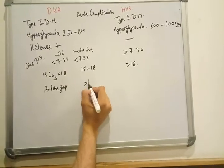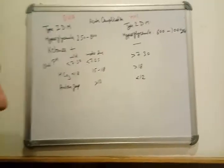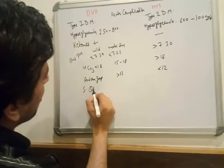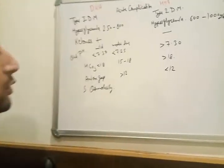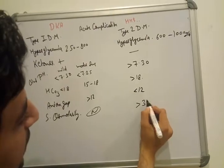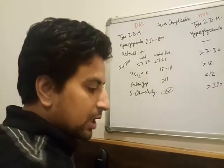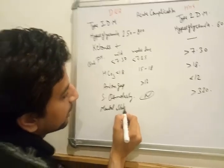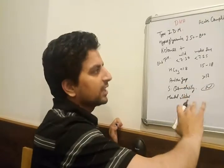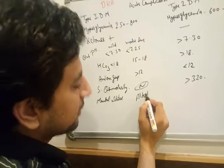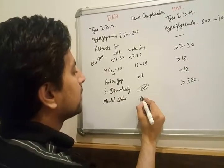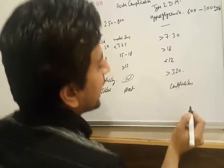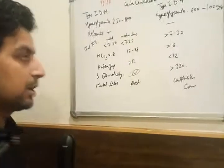The anion gap in DKA is more than 12 in both mild and moderate cases, whereas in HHS it is less than 12. Serum osmolarity in DKA may be normal, but in HHS it must be more than 320. Regarding mental status: in DKA it may be altered in severe cases but is otherwise alert. In HHS, patients present with confusion and can progress to coma — a hyperglycemic state.